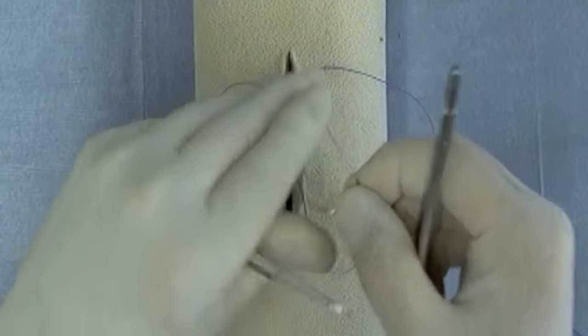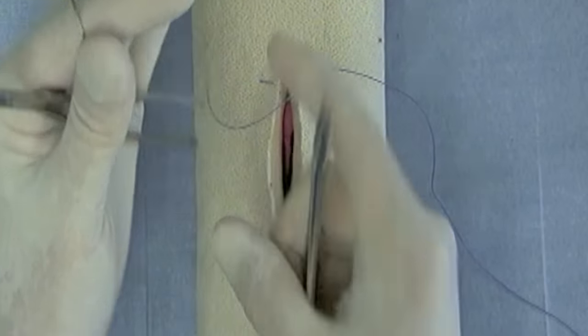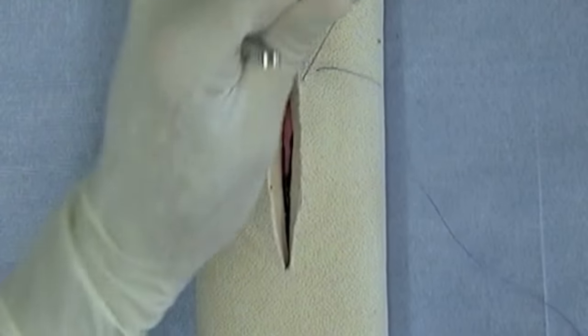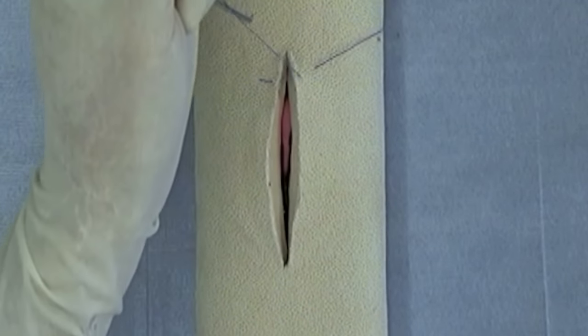Now notice that I have grasped the needle with my left hand, my thumb forceps are in the left hand, and now I gather the suture in order to complete the tie.